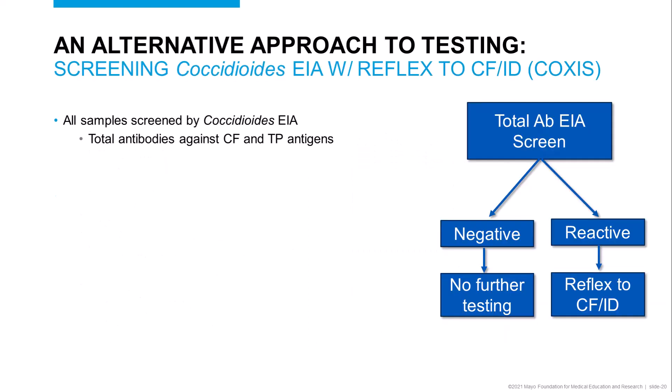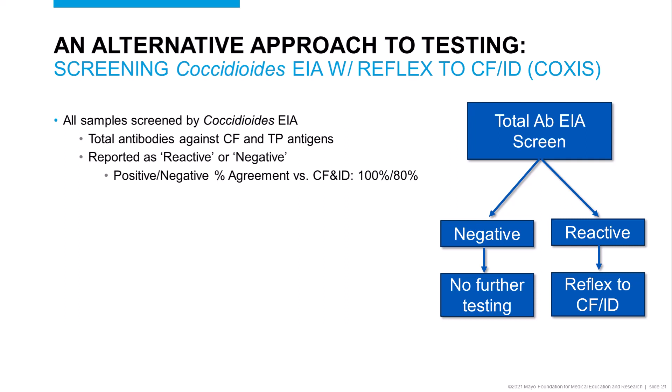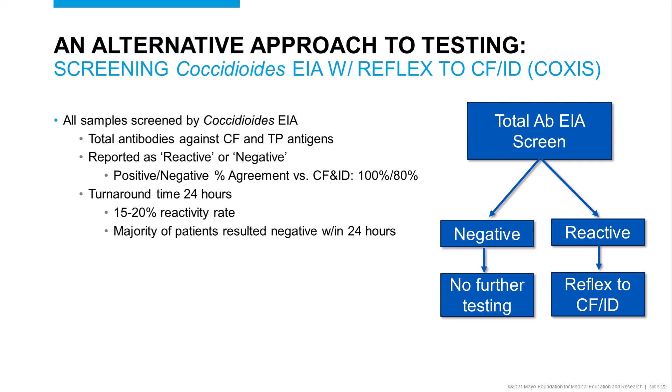The algorithmic approach begins with testing all samples using an automated coccidioides enzyme immunoassay. This EIA uses a proprietary mixture of recombinant and native antigens from coccidioides, and we detect both IgM and IgG class antibodies without differentiation between the two immunoglobulin classes. While the assay is FDA cleared, we have modified it to optimize positive percent agreement to 100% relative to complement fixation and immunodiffusion. However, this is at a cost of negative percent agreement, which decreases to roughly 80%. As a result, all EIA-reactive samples are automatically reflexed to the CF/ID panel for confirmation.